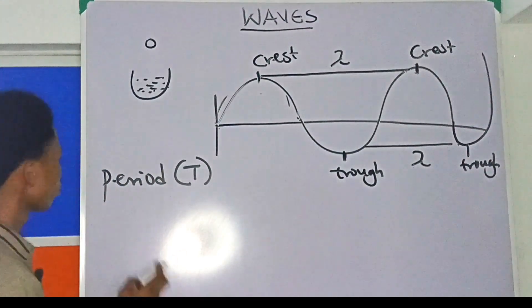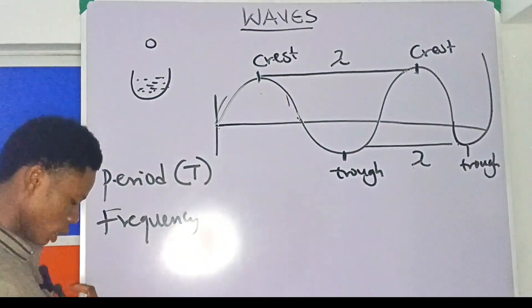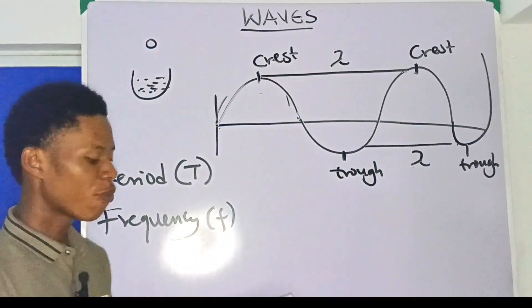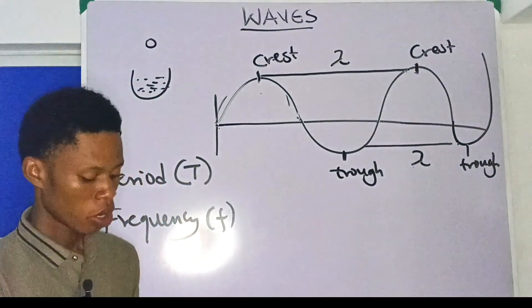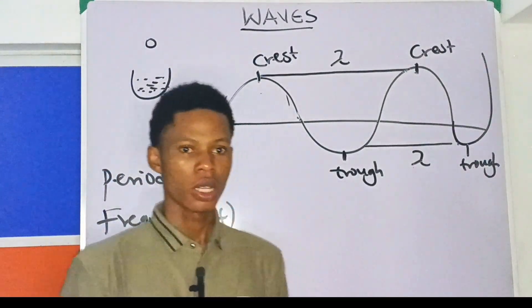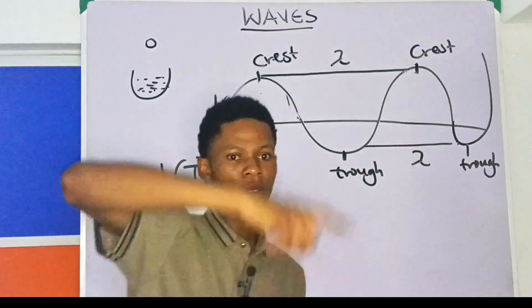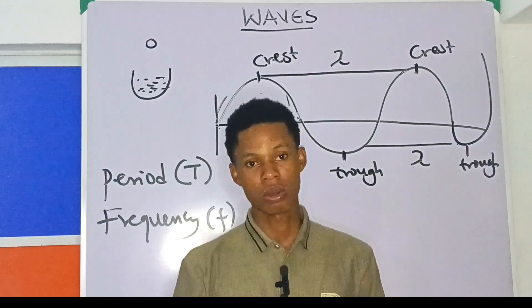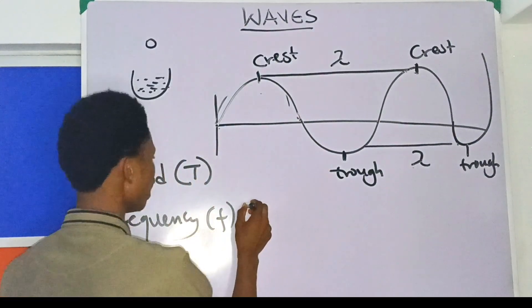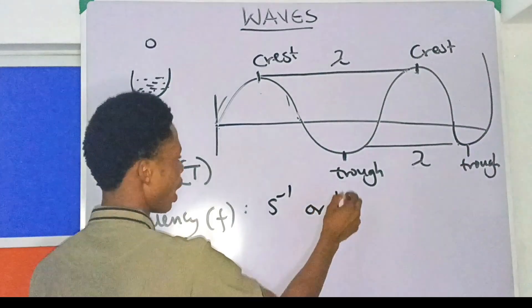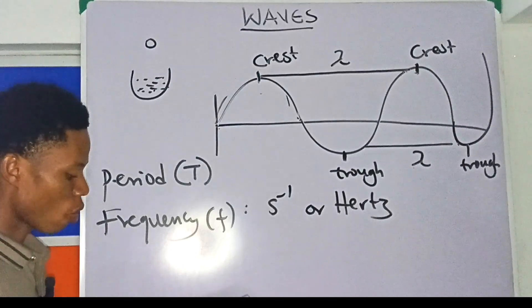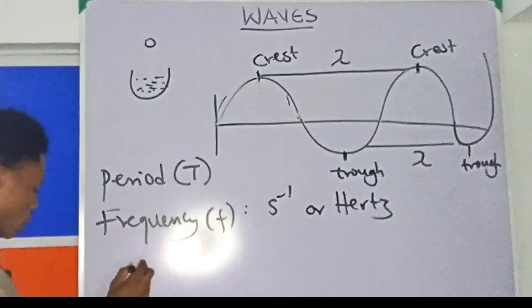The next thing is frequency, represented as small letter f. Frequency is the number of oscillations per second - the number of cycles per second. The unit of frequency is per second, or hertz.